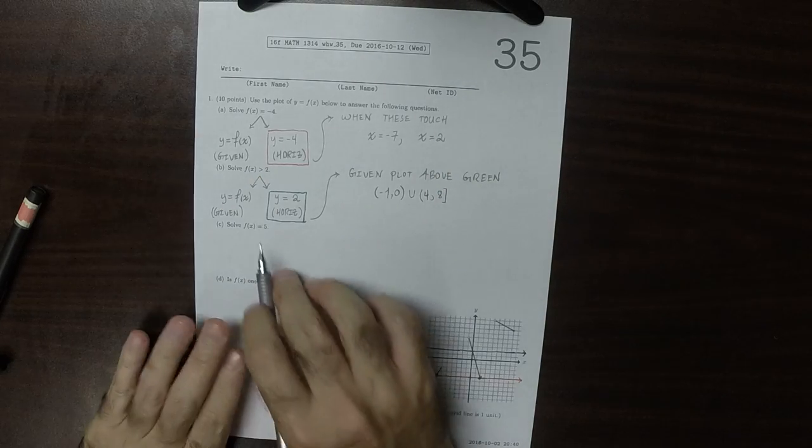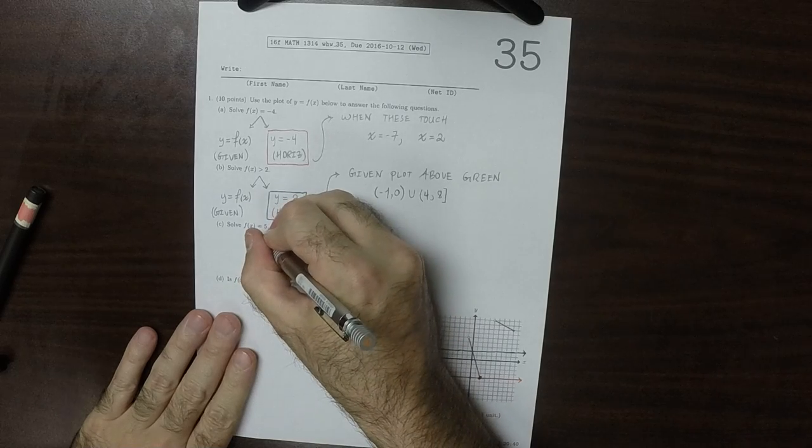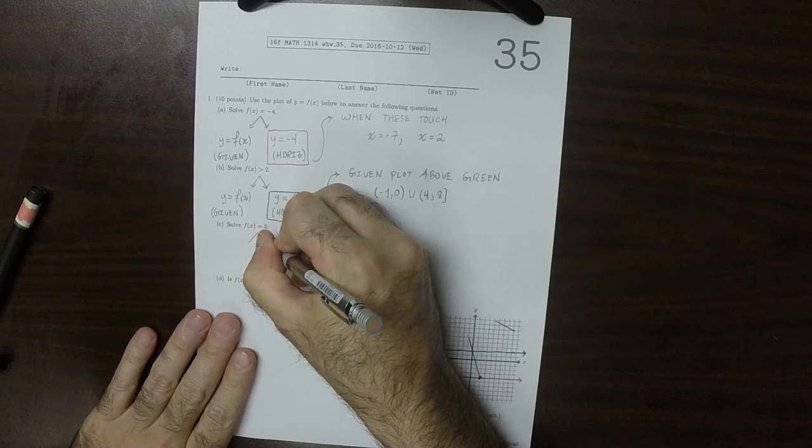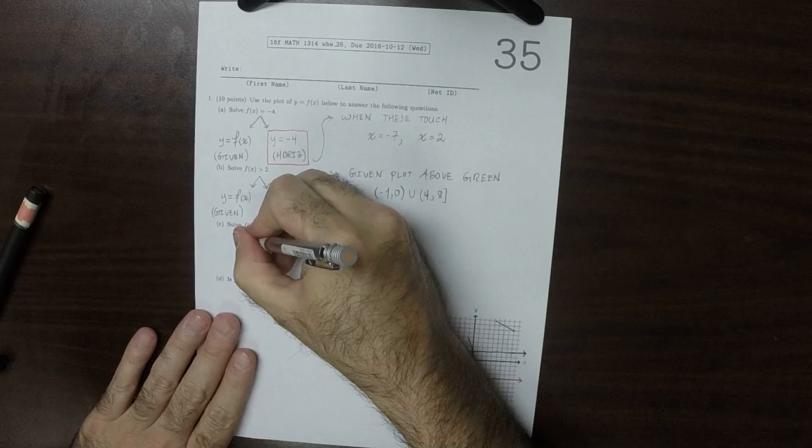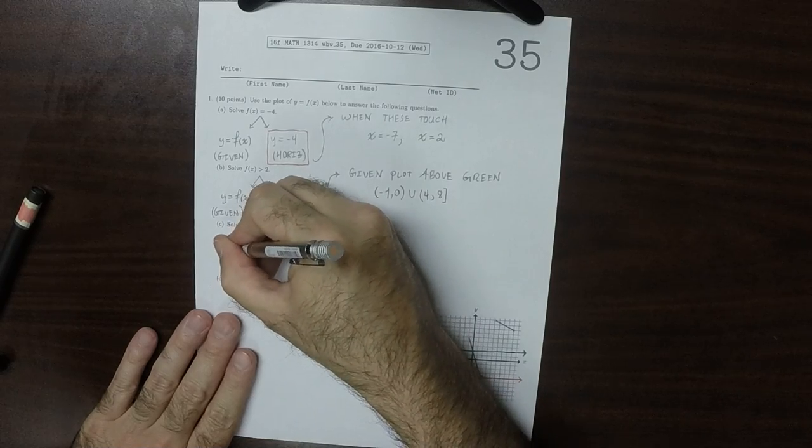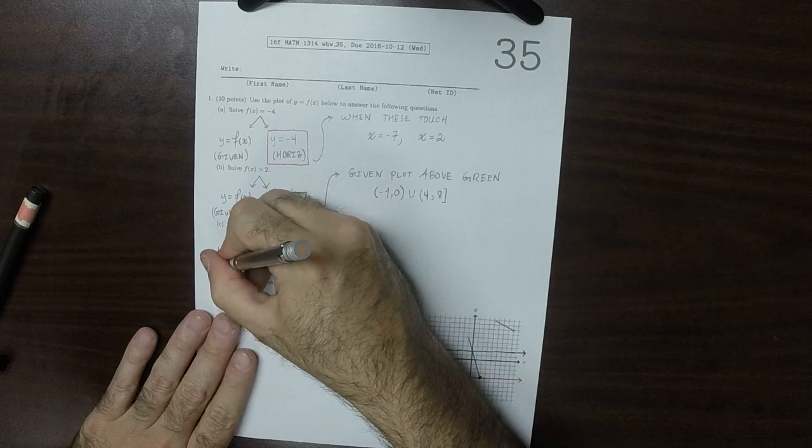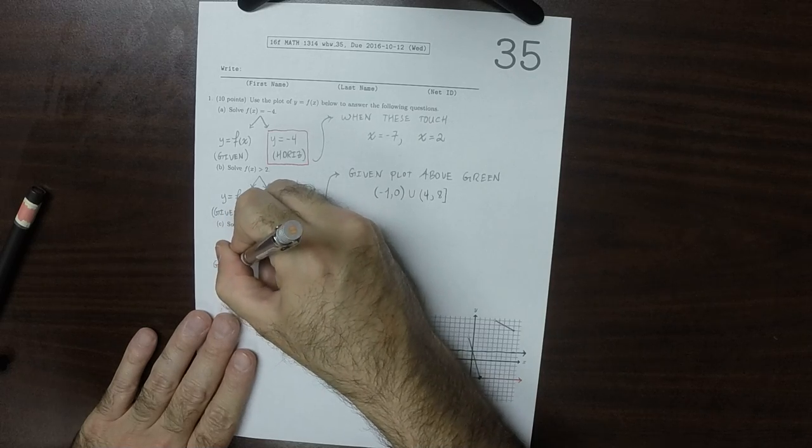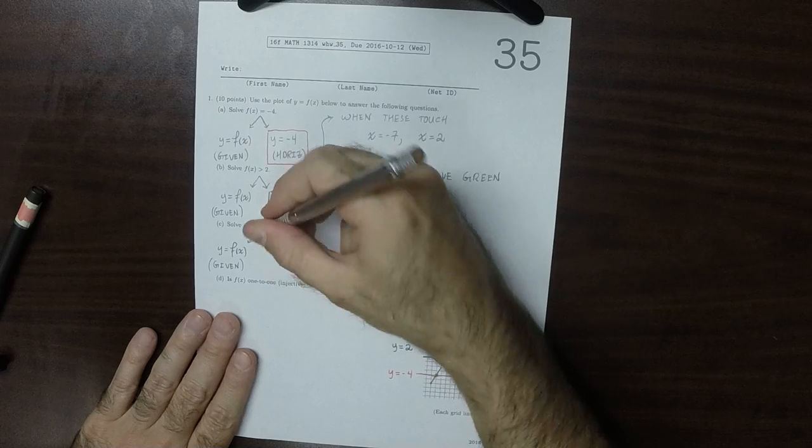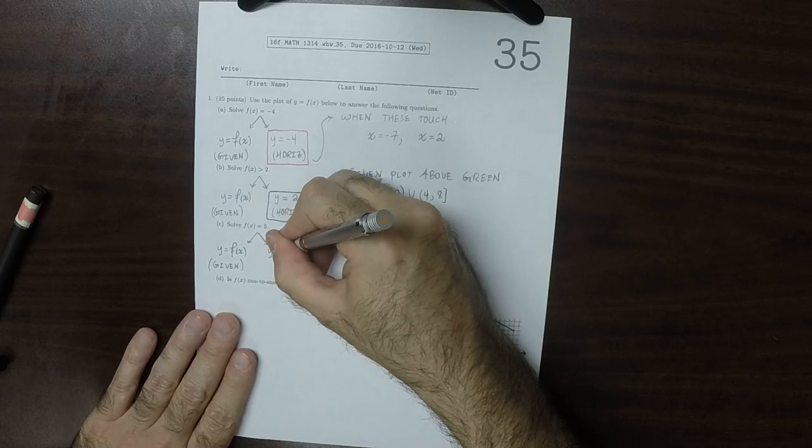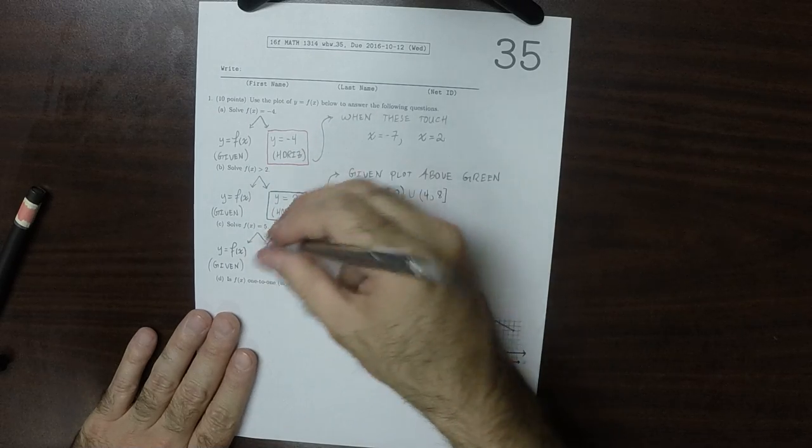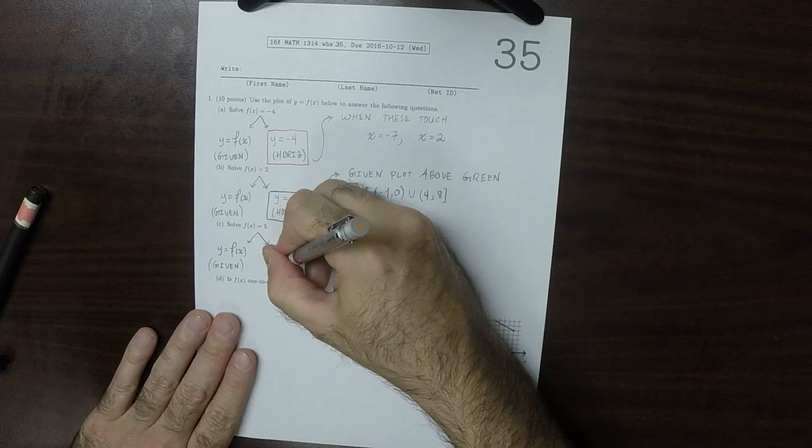Now we want to solve this one. So again, we split this into two pieces. y is f of x. This was given. And now the right-hand side. That'd be y is 5. y is the right-hand side. This would, again, be a horizontal line.